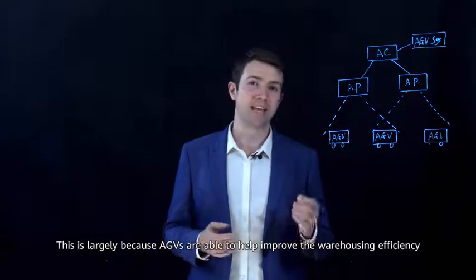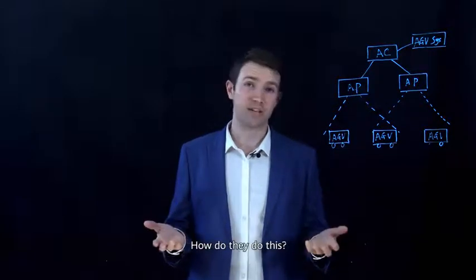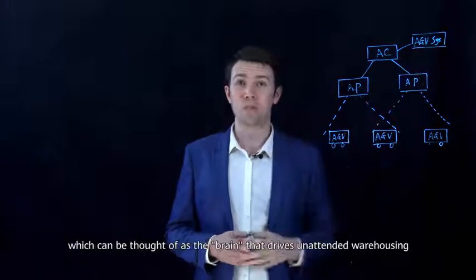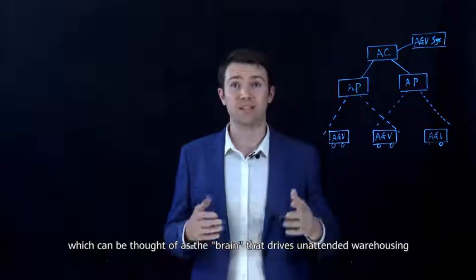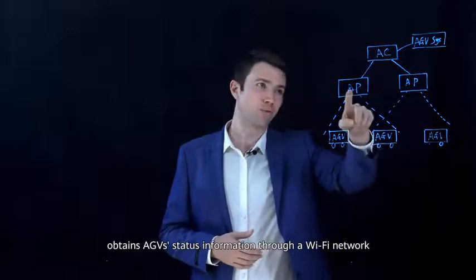This is largely because AGVs are able to help improve warehousing efficiency. How do they do this? Well, to start with, the control system of AGVs, which can be thought of as the brain that drives unattended warehousing, obtains AGV status information through the Wi-Fi network.